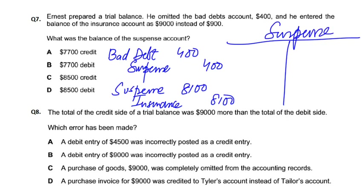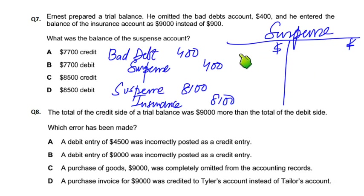The suspense account is a temporary account which has an opening balance but never a closing balance. The opening balance comes from the trial balance difference — whichever side is short. We don't know which side is short before we do these entries, so we post and leave one line in the suspense account for the opening balance. The debit can be credit first.